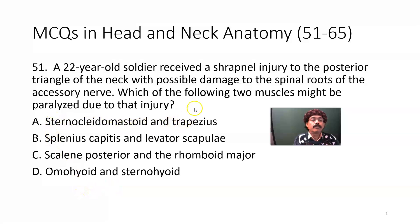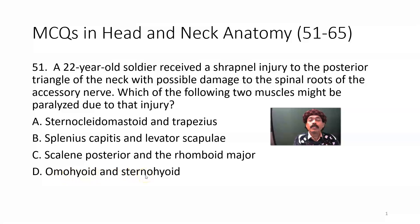Sternocleidomastoid and trapezius are innervated by the spinal roots of the accessory nerve. Splenius capitis is innervated by the cervical nerve. Levator scapulae gets innervation from C3, C4, and may also get innervation from the dorsal scapular nerve. Scalenus posterior is innervated by the cervical nerve. Rhomboid major is innervated by the dorsal scapular nerve. Omohyoid and sternohyoid are innervated by the ansa cervicalis. So our answer is sternocleidomastoid and trapezius, innervated by the spinal roots of the accessory nerve.